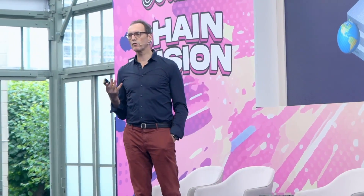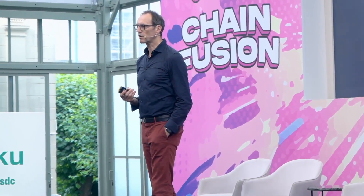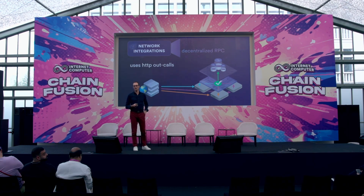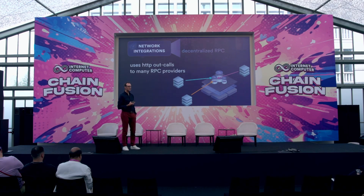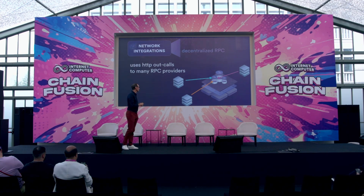For other chains, we use HTTP outcalls. ICP smart contracts can make HTTP calls to RPC providers for EVM chains or other chains. All replicas make that call separately, get the result, run it through consensus, and pass it back to smart contracts — guaranteeing the result is trustworthy because many instances call out and feed that back. For RPC providers, calling just one would create a single point of failure, so for decentralized RPC integration you call many RPC providers, compare the results, and if they all match, you're good to go. This makes it secure against single-party failure.